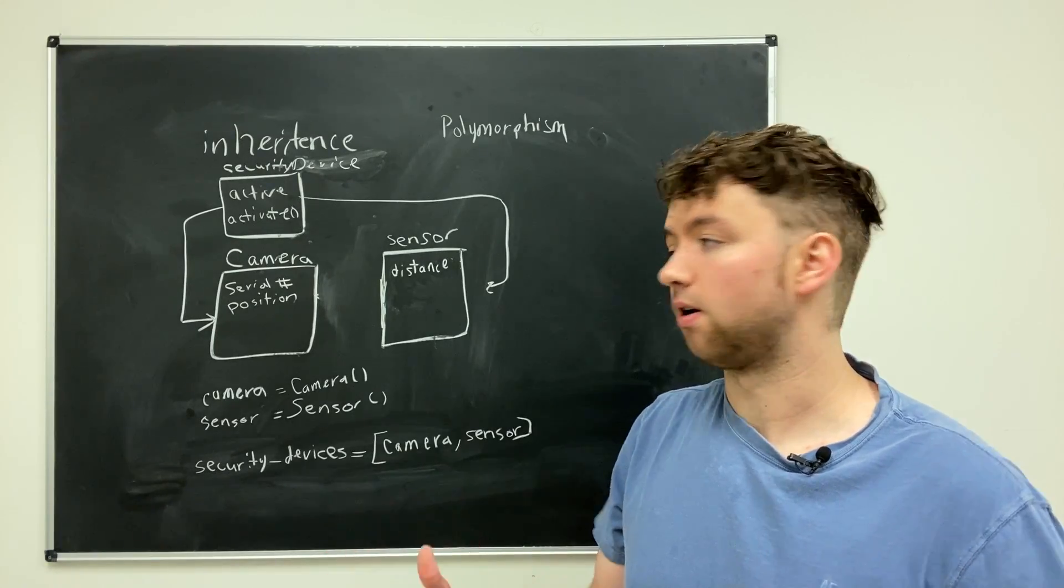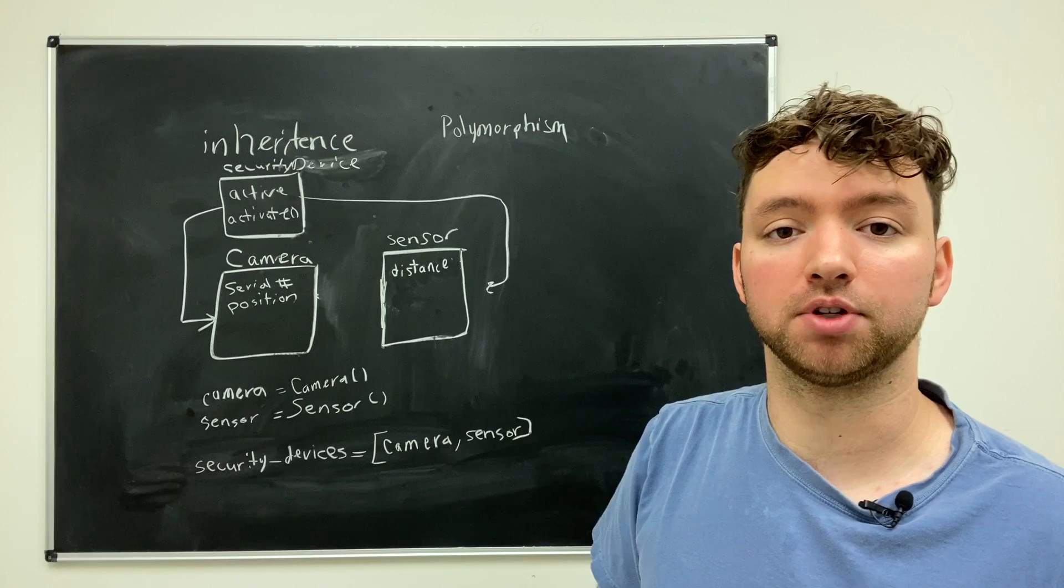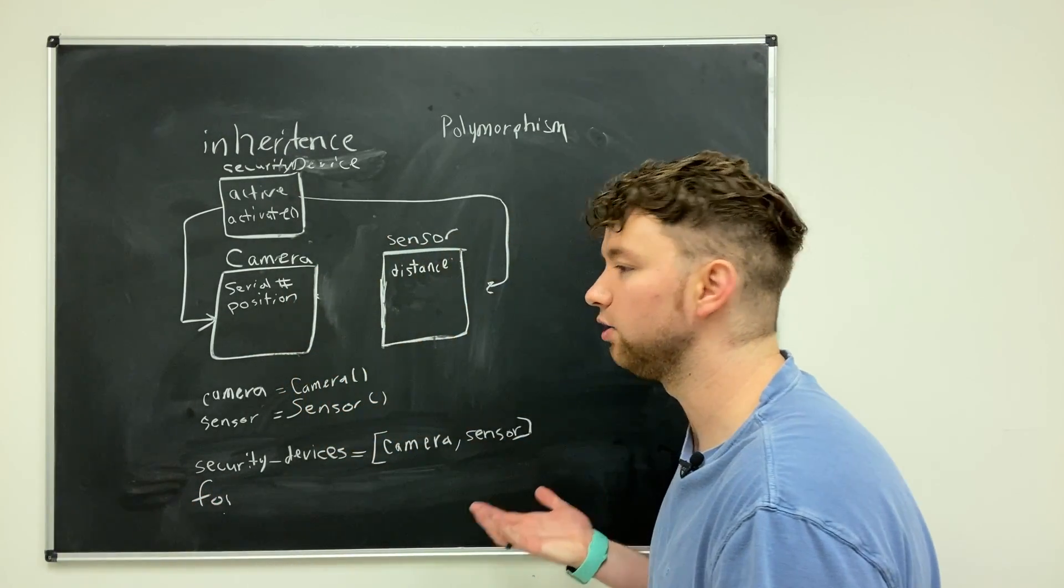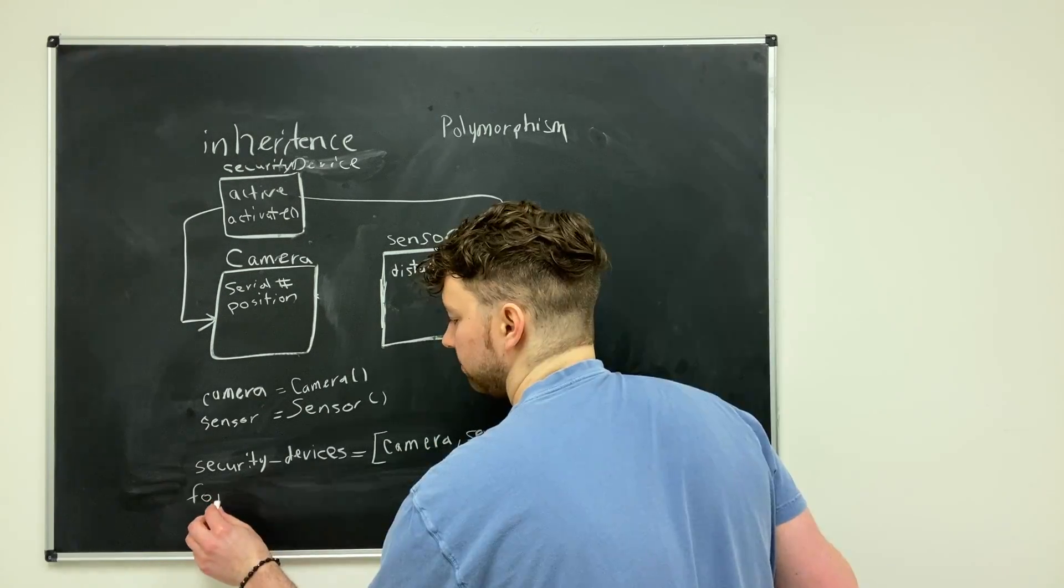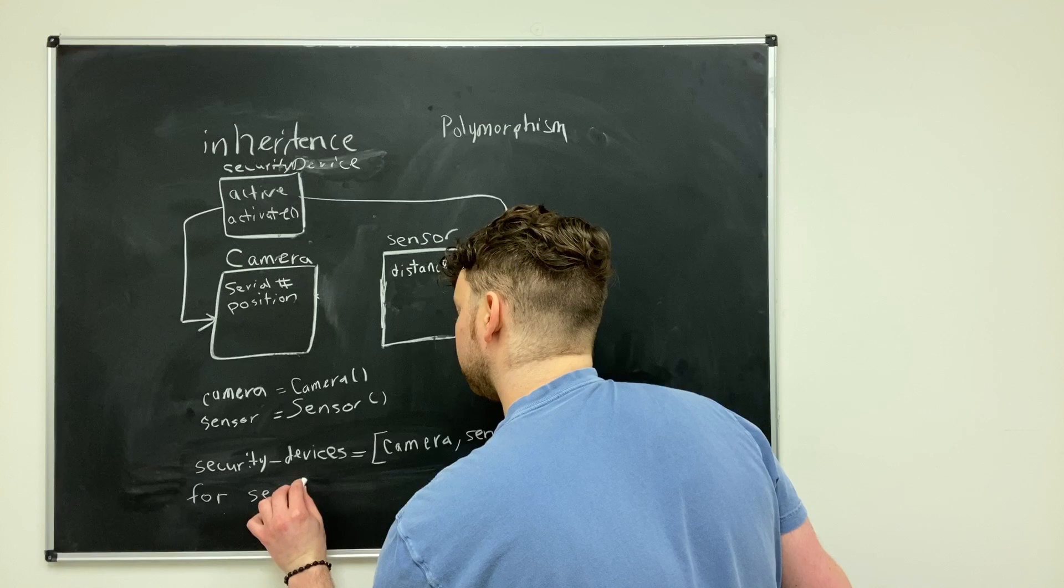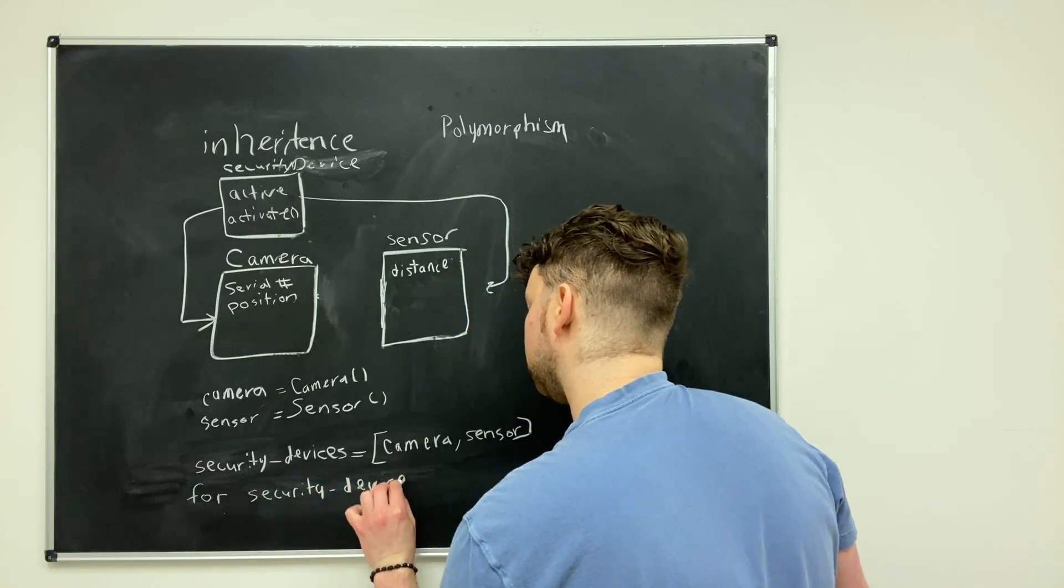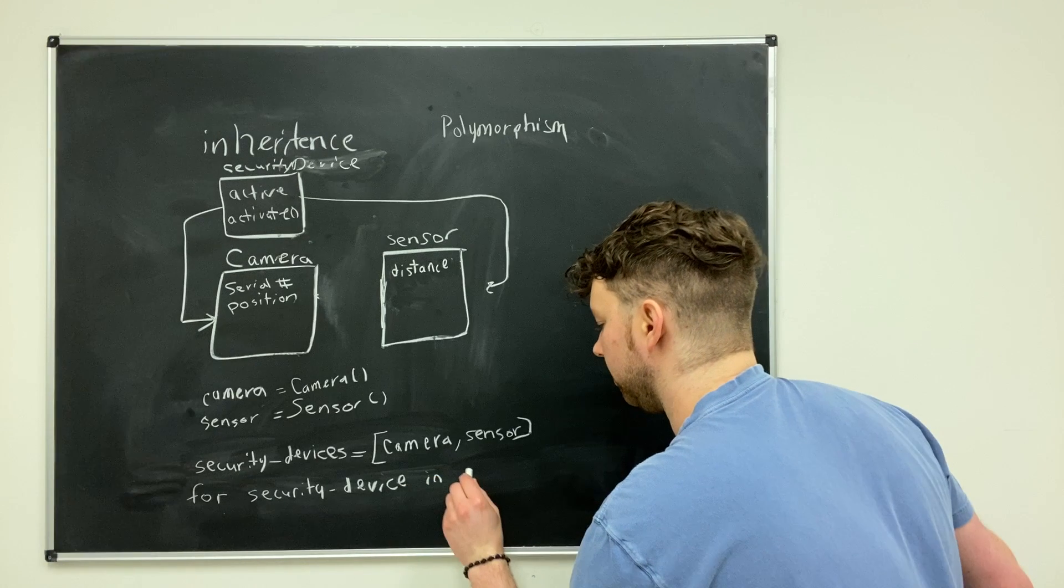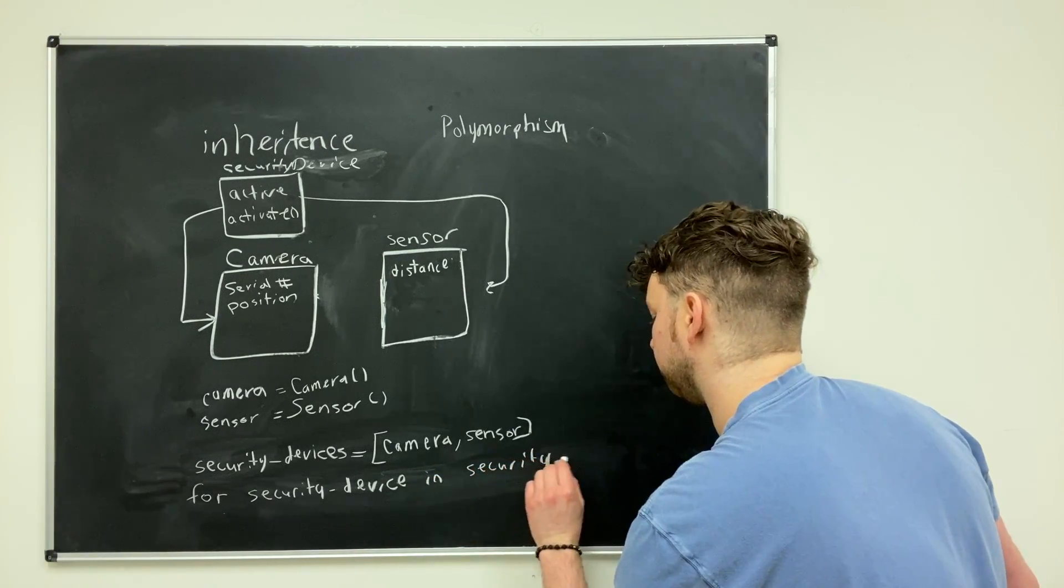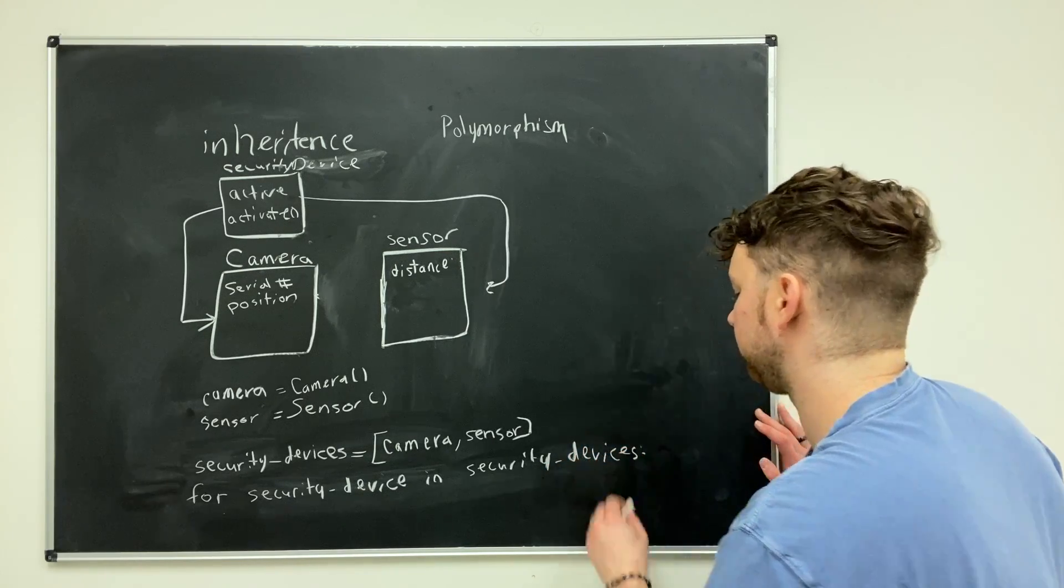And now we can address all of the cameras and all of the sensors at one time telling them to do something. So let's just create a loop. So I'm just going to say for security device in security devices. Should have picked shorter names. All right. So that's how we would define the loop.